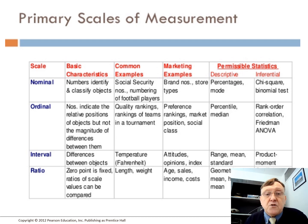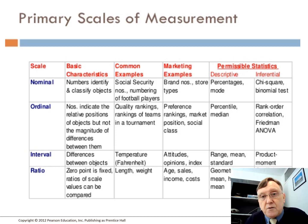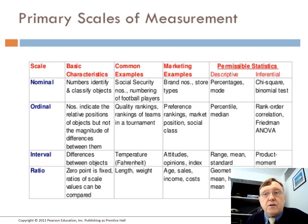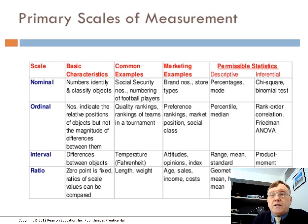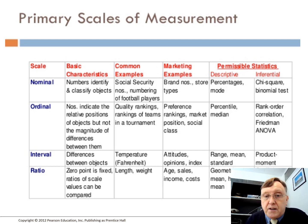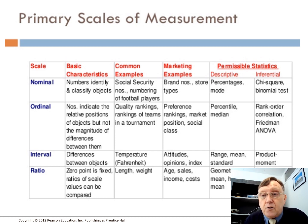With ordinal scale, numbers indicate the relative positions of objects but not the magnitude of difference between them. Common examples include quality rankings and rankings of teams in a tournament. So number one might be much better than number two, but there's no quantified magnitude of difference. For example, if a football match ends 1-0, one team is first and the other second. But if one team scores 25 goals and the other none, the ranking is still first and second — there's no scale of difference captured. Marketing examples include preference rankings, market position, and social class. Permissible descriptive statistics are percentile and median; inferential statistics include rank order correlation or the Friedman ANOVA.